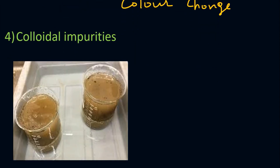The fourth type is colloidal impurities. Colloidal impurities include materials like sand, clay, and silica, as shown in this figure. These impurities can be removed by certain filtration or software techniques.